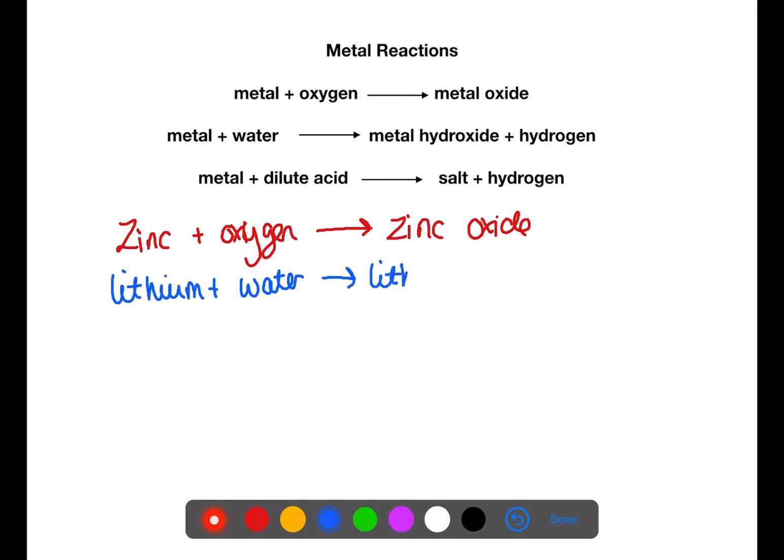When metals react with acid they will produce a salt and hydrogen. Before we look at a specific reaction we should recap how the acids and the salt names relate.